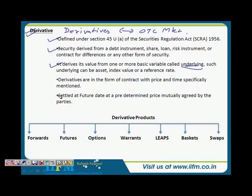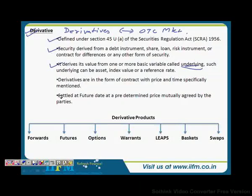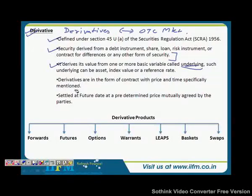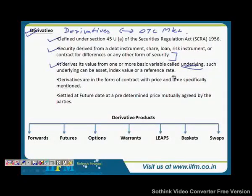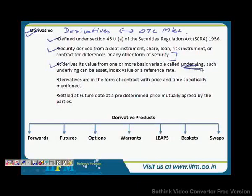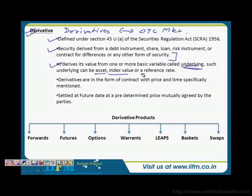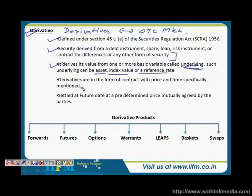Derivatives are securities derived from a debt instrument, share, loan, risk instrument, or a contract for difference, or any other form of security. They derive their value from one or more basic variables called the underlying. Such an underlying can be an asset, an index value, or even a reference rate. In currency futures, for example, the underlying is a reference rate.